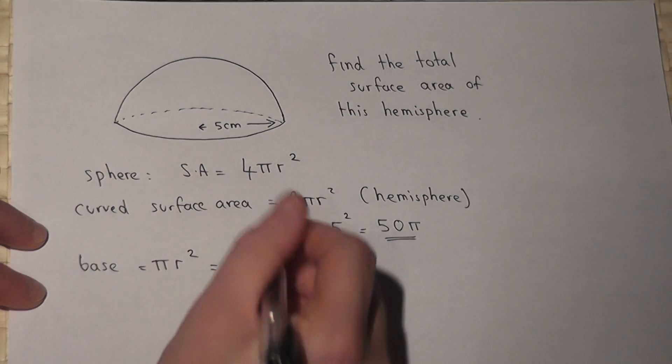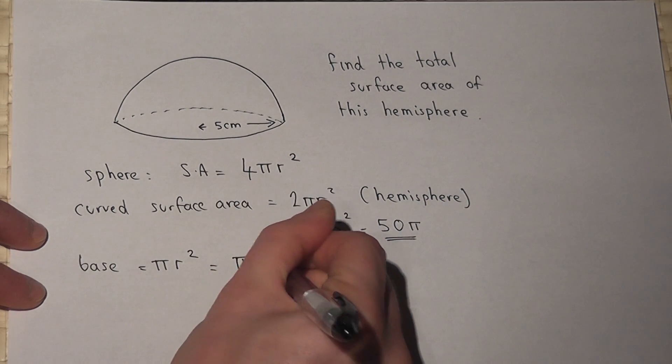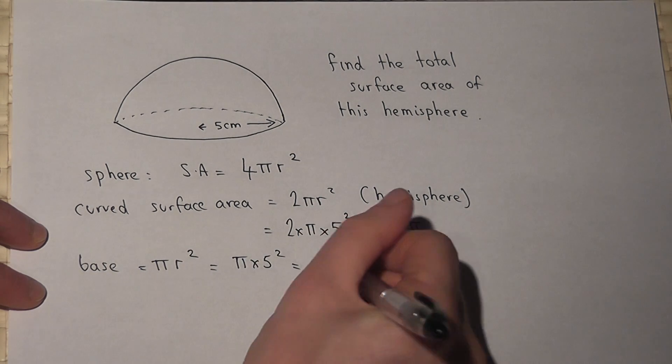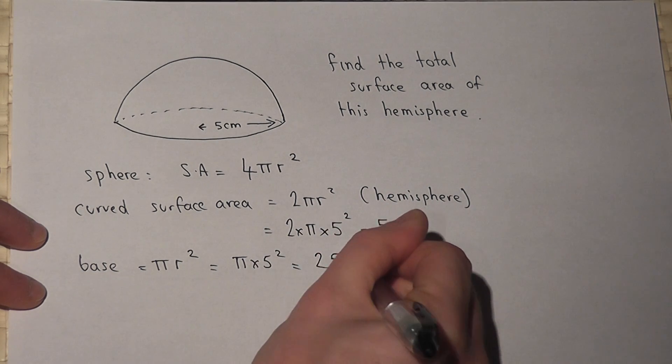Now r is 5, so that's pi times 5 squared. 5 squared is 25, that's 25 pi.